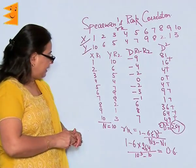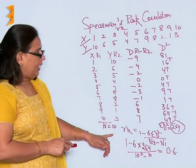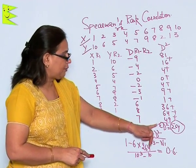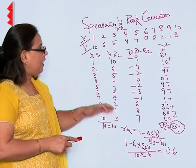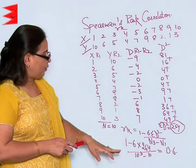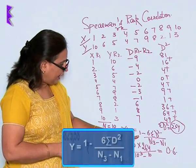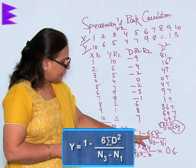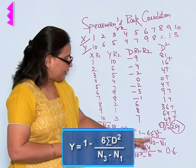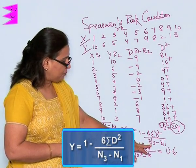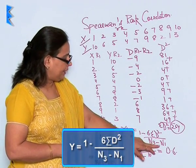So what I have is the number of observations, and I have the sigma d square, which is 264. The formula of Spearman's Rank Correlation is 1 minus 6 into sigma d square upon number of observation cubed minus n.